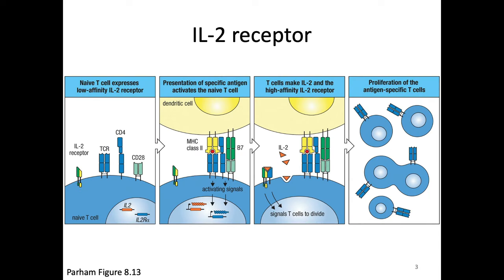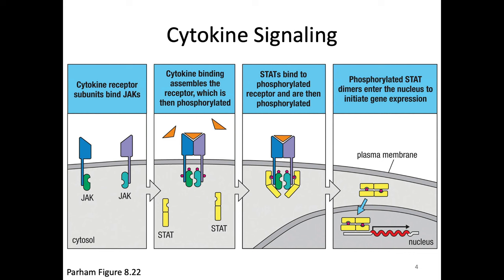Our IL-2 receptor is actually multiple parts — they're not always stuck together. Usually we've got multiple parts of our cytokine receptor diffusing around the membrane separately. That cytokine receptor is associated with a protein connected to its cytoplasmic domain. When the cytokine is around, it brings the chains of the receptor into proximity, which means these cytoplasmic domains with their tightly associated kinase get pushed together as well. The kinases are in induced proximity and can now phosphorylate each other.